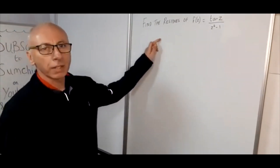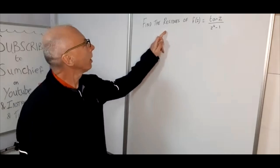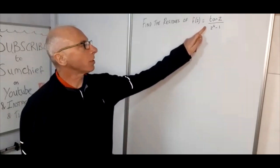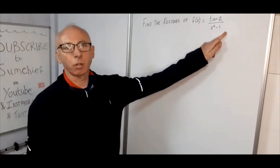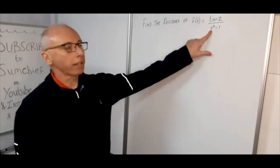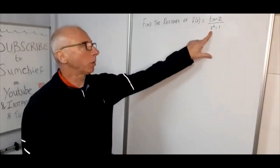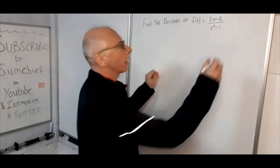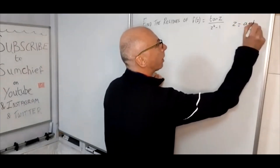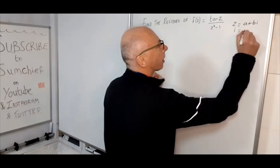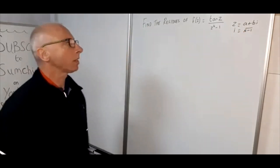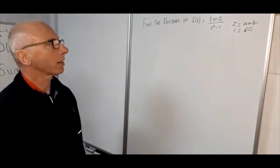We're going to look at some complex analysis and we're going to look at the residues of this function: tangent z divided by z to the power of 4 minus 1. z is a complex variable, z equals a plus bi, and i equals the square root of minus 1. So normal business for complex analysis.